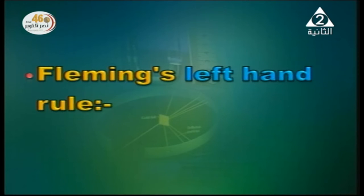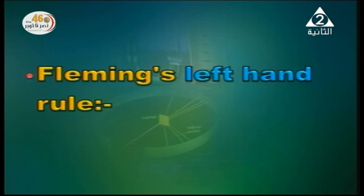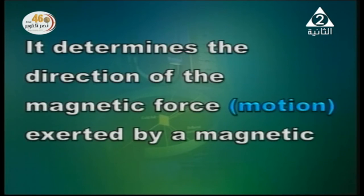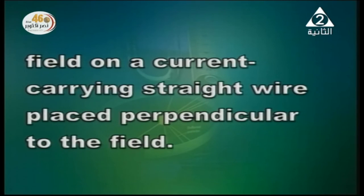One use of Fleming's left-hand rule: when we've got a current-carrying straight wire placed in a magnetic field and the wire experiences a force and moves, we want to determine the direction of motion — we use Fleming's left-hand rule. It determines the direction of the magnetic force exerted by a magnetic field on a current-carrying straight wire placed perpendicular to the field.